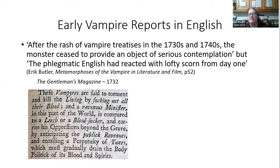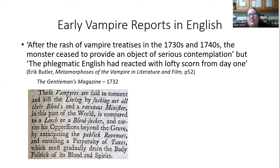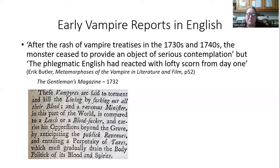In British writing, right from the beginning, we see the vampire being used more metaphorically and allegorically. In the Gentleman's Magazine from 1732, the writer gives a political allegory to explain the Arnold Paul tale. He says: 'These vampires are said to torment and kill the living by sucking out all their blood. And a ravenous minister in this part of the world is compared to a leech or a blood-sucker, carrying his oppressions beyond the grave by anticipating the public revenues and entailing a perpetuity of taxes, which must gradually drain the body politic of its blood and spirits.' Here we see the idea of an aristocratic or governmental vampire as a drain on those lower in the system.